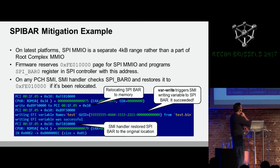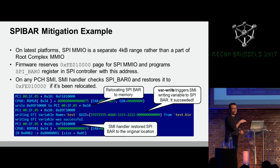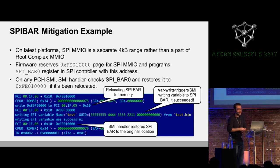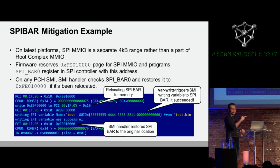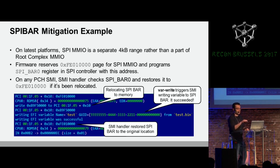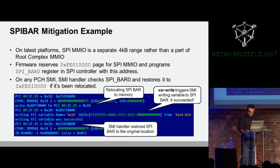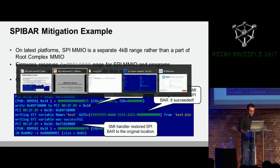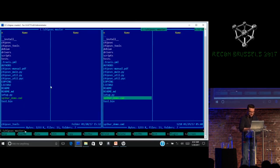Here is a screenshot showing this mitigation in action. First the attacker relocates the SPI BAR to overlap with regular DRAM, then causes a variable write that generates an SMI. Upon exit from the SMI, checking the value of the SPI BAR shows it actually changed back to its default location. Now let me show you this on this system.